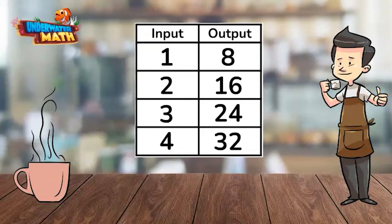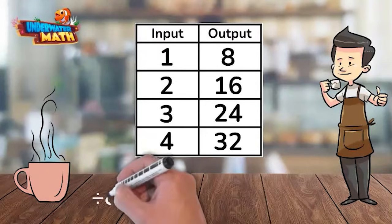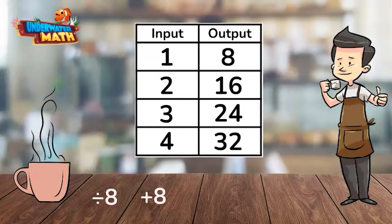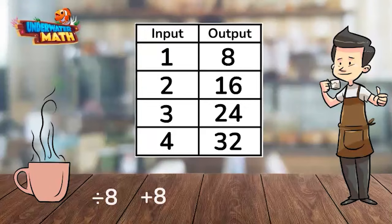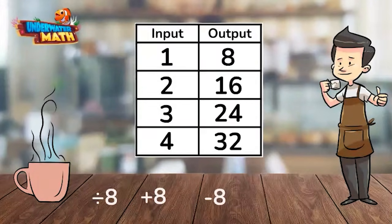Let's try another one. Look at the relationship between the input values and output values. Are we dividing by 8? 1 divided by 8 does not equal 8, so that can't be the rule. What about adding 8? 1 plus 8 is equal to 9, so that can't be the rule either. 1 minus 8 does not equal 8, so that one doesn't work.